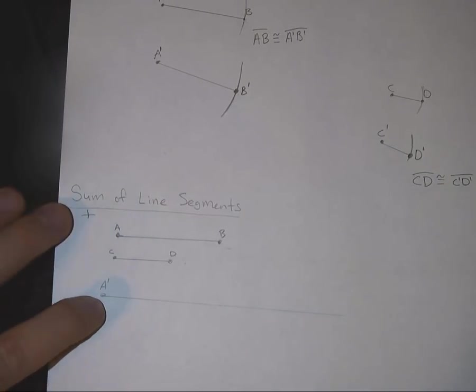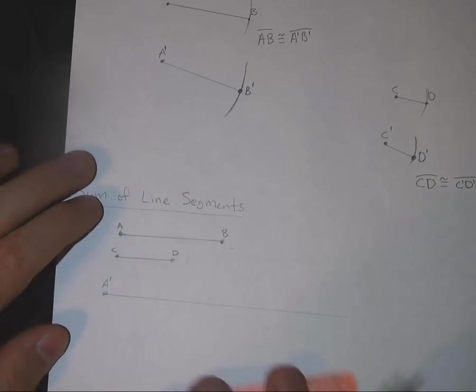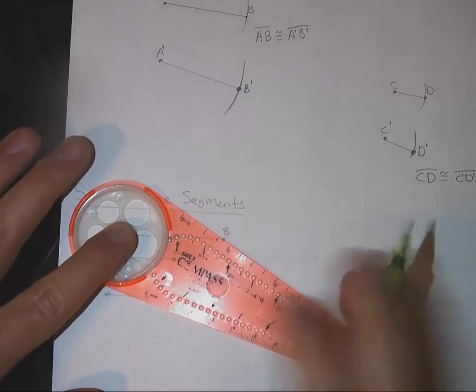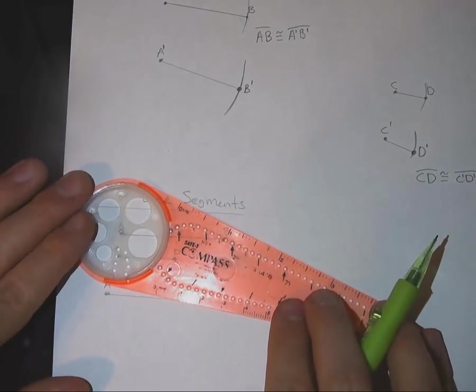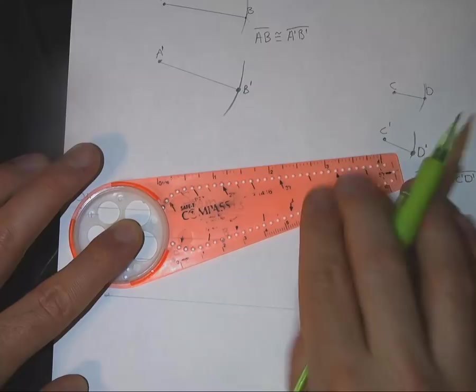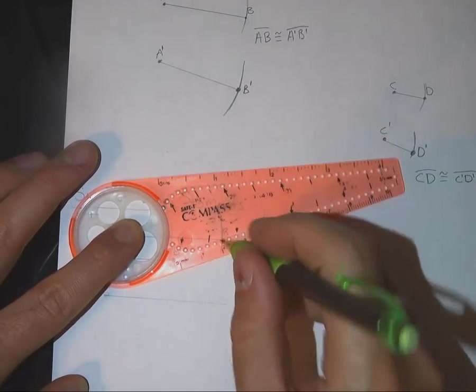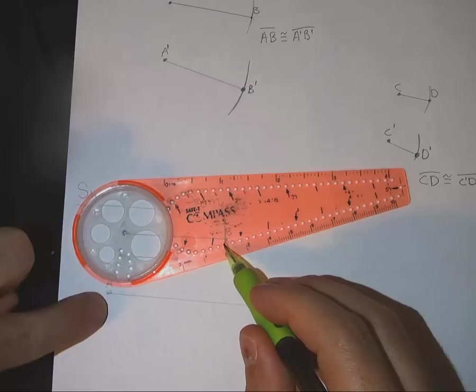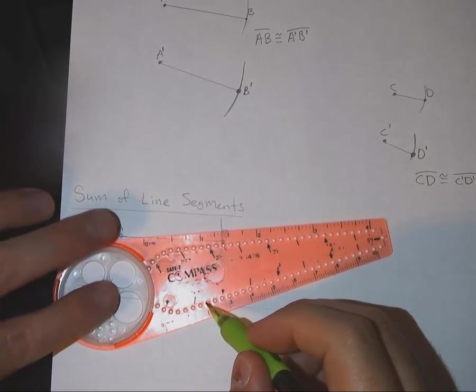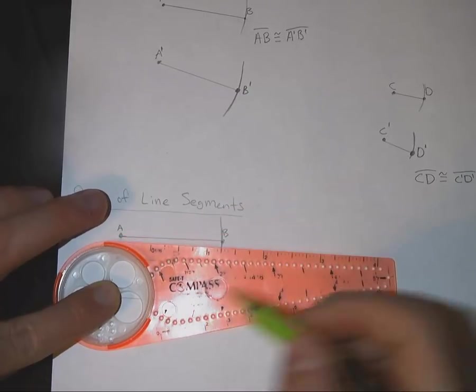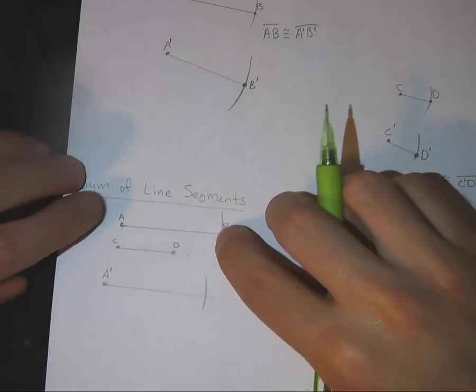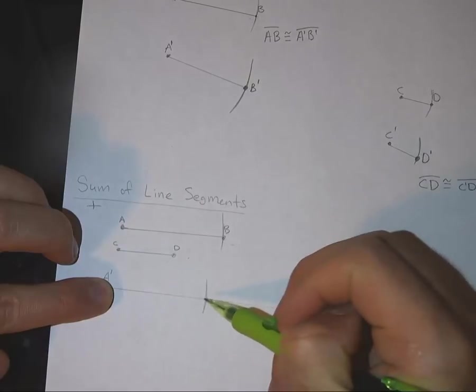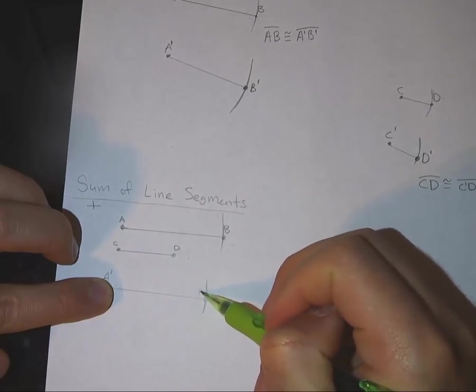So obviously I've labeled this A prime for a reason, because I'm going to start with the point A, and I'm going to take the center of my compass and place it on A. And I'm going to get my circle out to B here. Without taking my pencil out of that point, I'm going to move the center of this compass down to A prime and make my mark. So right now I have a circle that was started from A to B. That same circle is put from A prime, and I'm going to make this point B prime.